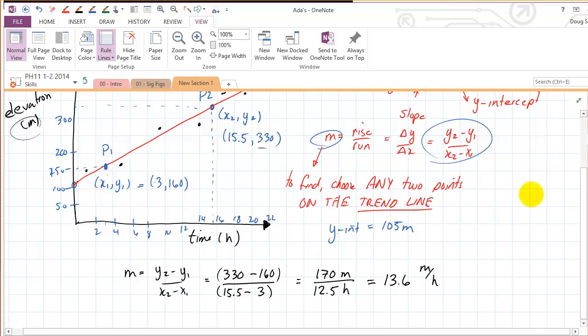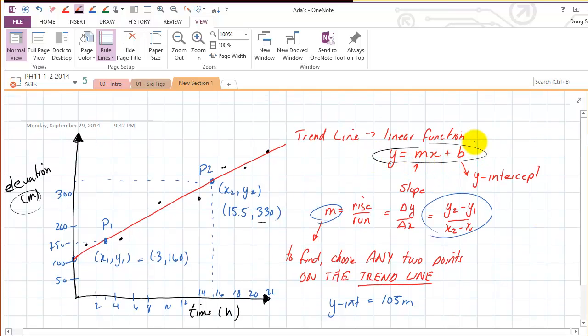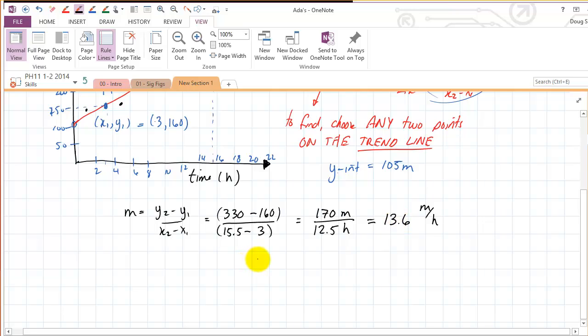So then finally, we're going to reconsider this, which is the equation of linear function slope-intercept form. So I know what b is, b is my y-intercept, which is 105 meters, and m is our slope, which is 13.6. So we could say y equals 13.6 meters per hour times x plus 105 meters. But what I was saying in class earlier is we can use more meaningful symbols, like we're not talking about y's and x's, we're talking about elevation and time. So elevation, maybe it could be height, so h, h for height, is 13.6 meters per hour times time plus 105 meters.